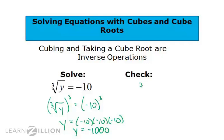We'll plug that in to check it, asking is the cube root of negative 1,000 equal to negative 10? Well, that's asking us what number times itself three times is negative 1,000. It would be negative 10. Negative 10 does equal negative 10. So, that checks out and y equals negative 1,000 is our solution.